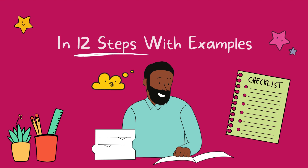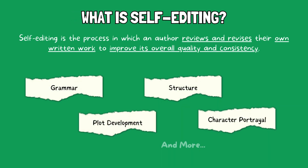Let's start by explaining what self-editing is. Self-editing is the process in which an author reviews and revises their own written work to improve its overall quality and consistency. This involves scrutinizing the book for errors in grammar, punctuation, and spelling, as well as evaluating the structure, clarity, and consistency of the content. Self-editing also includes refining the writing style, ensuring coherence in plot development and character portrayal, and addressing any issues related to tone and theme.